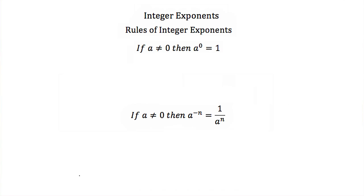Let's go over these rules. If we have a base that's not equal to zero, and that base is put to the zero power, then it's equal to 1 — any number other than zero to the zero power is always equal to 1. And if we have a base that's not zero and it's put to a negative exponent, then that term goes in the denominator: a to the negative n is the same as 1 over a to the n.